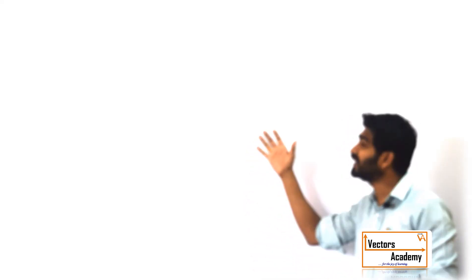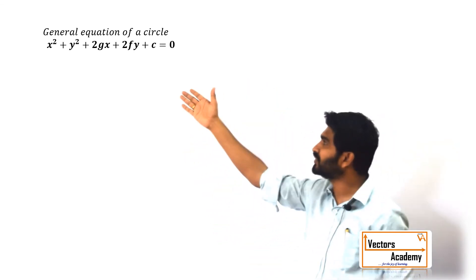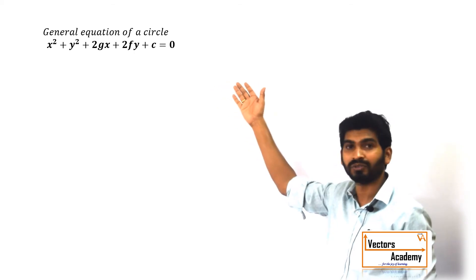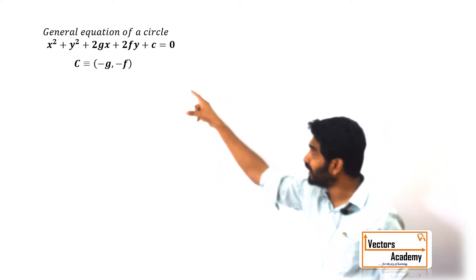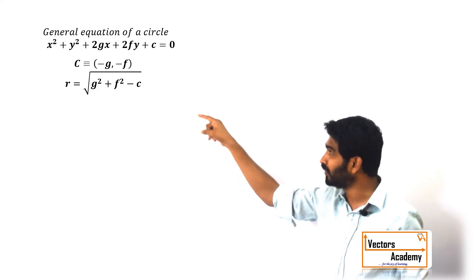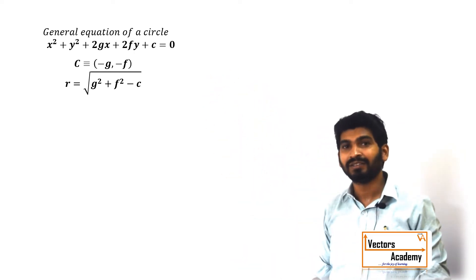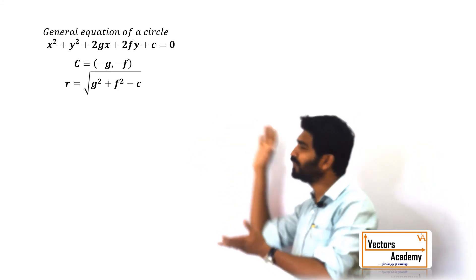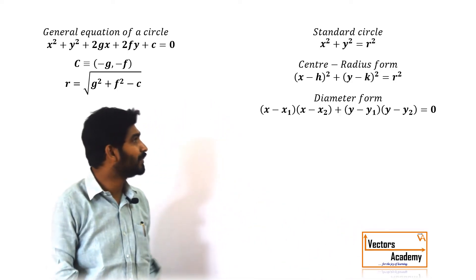Now we have seen how to find the equation of a circle using given conditions. Suppose we need to find the position and size of the circle using a given equation — exactly the reverse process. Given the general equation x² + y² + 2gx + 2fy + c = 0, the center can be found as (-g, -f) and the radius can be found as √(g² + f² - c). These are the two simple formulas to find the center and radius of the circle.